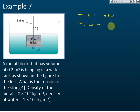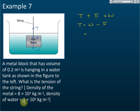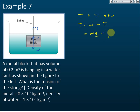Before finding the tension, we need to find the weight and the upthrust. We have the densities of the metal and the density of the water. To find weight, we use mg. For upthrust, we use ρVg — density times volume times g.